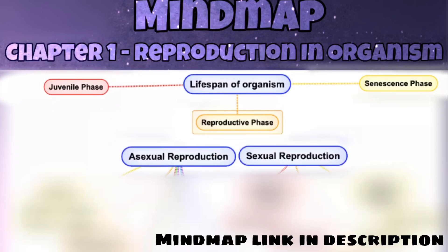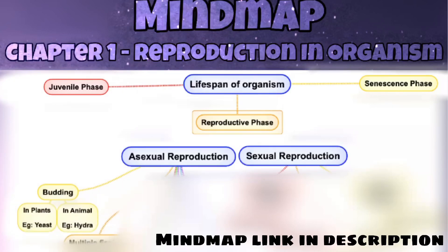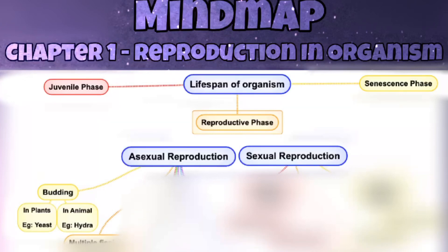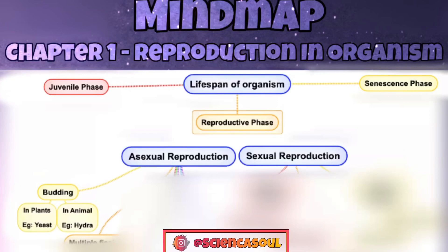The reproductive phase is further classified into two types: asexual reproduction and sexual reproduction. In asexual reproduction, a single parent is capable of producing offspring. There are many types; for example, budding occurs in plants like yeast and in animals like hydra. Budding is a type of asexual reproduction in which a new organism develops from a bud.